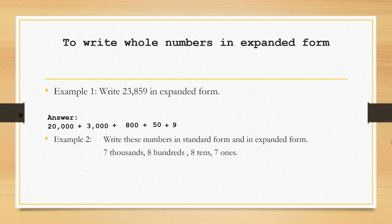Another example, we're going to write these numbers in standard form and in expanded form. We have 7 thousands, 8 hundreds, 8 tens, and 7 ones. To answer this, first, we're going to write it in standard form. This is simply 7,887.